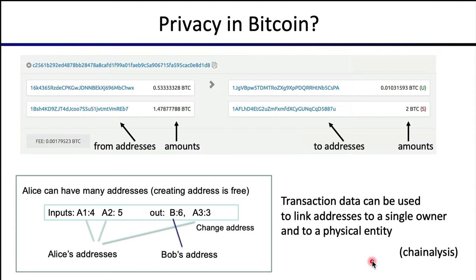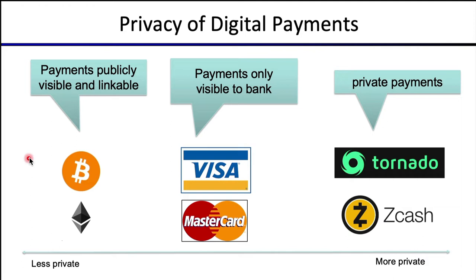We can see there are different levels of privacy in the financial system. In Bitcoin and Ethereum today, all payments are publicly visible and linkable to at least a pseudonym. In a traditional financial system like credit cards, payments are visible to the bank but not to the outside world. Using a blockchain, we can actually build a fully private system — using TornadoCash and Zcash — such that even the operators will not know who's transacting with whom.